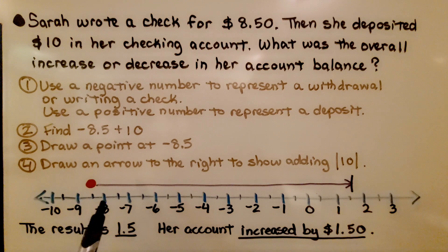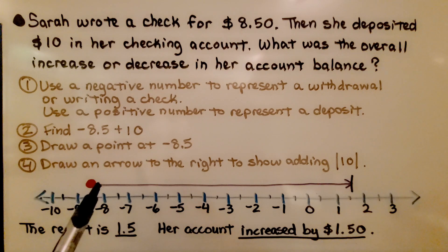We draw a point at negative 8.5, that's going to be in between negative 8 and negative 9, it's right here. And then we draw an arrow to the right to show adding the absolute value of 10, which is 10.